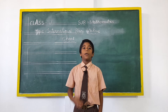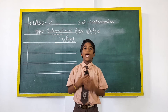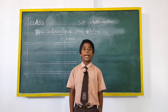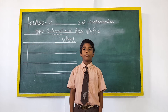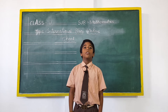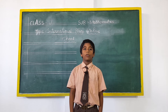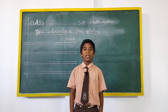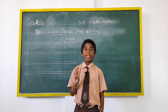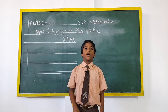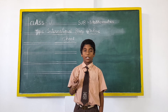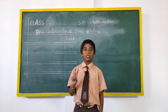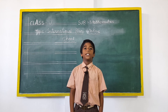Good morning to one and all. My name is Amshanmukh Saiganesh. I am from 5th F1. Today I am going to tell you about the international place value chart. In our international place value chart, there are three periods: ones period, thousands period, and millions period.